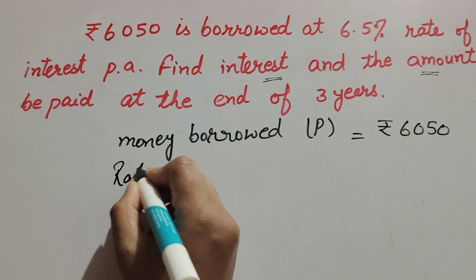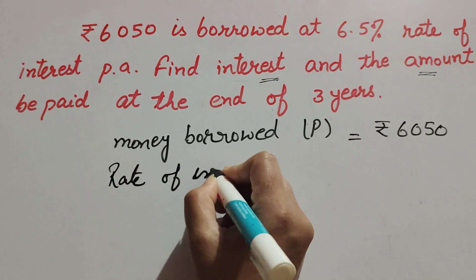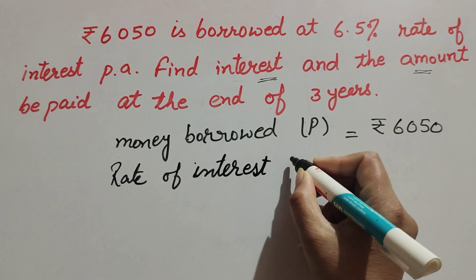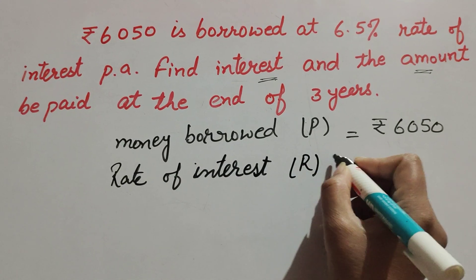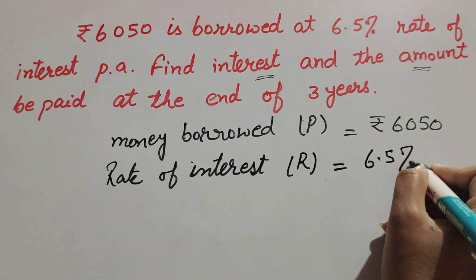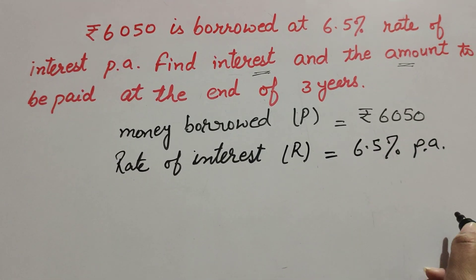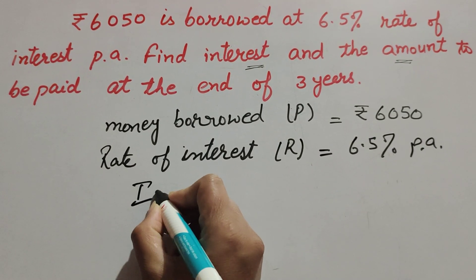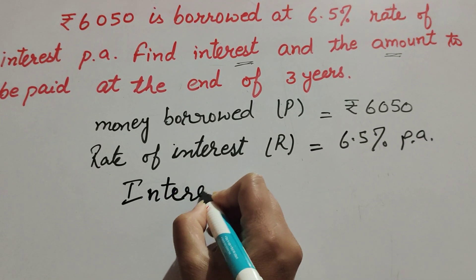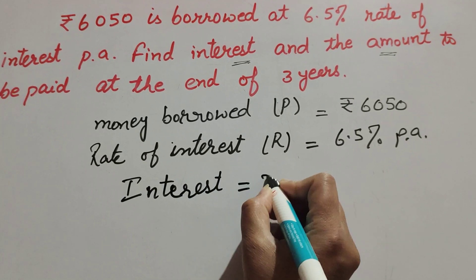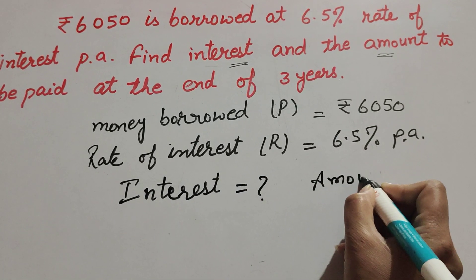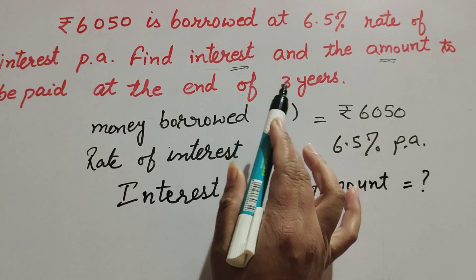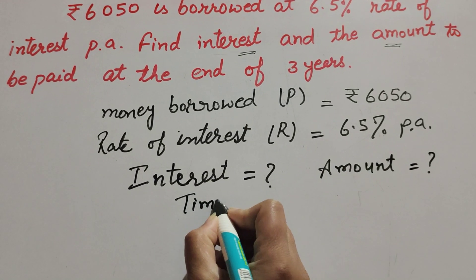Rate of interest, R, represents rate of interest. It is equal to 6.5 percent per annum. We find interest and then we find the amount that has to be paid at the end of three years. Time is three years.